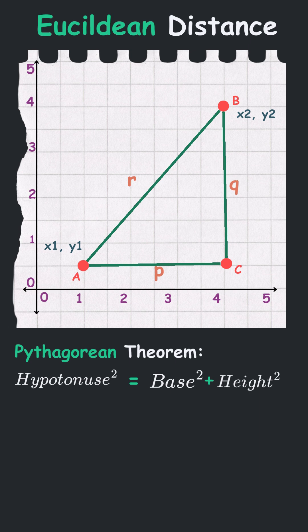And r is the hypotenuse of our right-angled triangle. If we substitute the values into the Pythagorean theorem, we get r square is equal to p square plus q square, which means r is equal to the square root of p square plus q square.